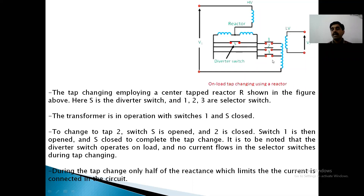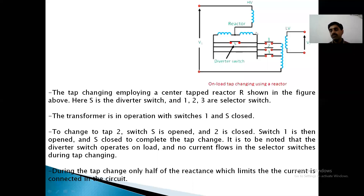What we observe here is that the diverter switch operates on load and no current flows in the selector switches during tap changing. When changing from switch 1 to switch 2, there should not be any current flow in the selector, which is why we open the diverter switch first. Half of the reactor is included, which limits the current connected to the circuit — that is the use of the reactor.